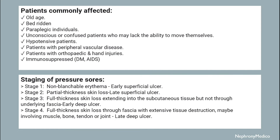The staging of pressure sores: Stage 1 is non-blanchable erythema. Stage 2 is partial thickness skin loss. Stage 3 is full thickness skin loss extending into the subcutaneous tissue but not through the underlying fascia. Stage 4 is full thickness skin loss to fascia with extensive tissue destruction, possibly involving muscle, bone, tendon, or joint.